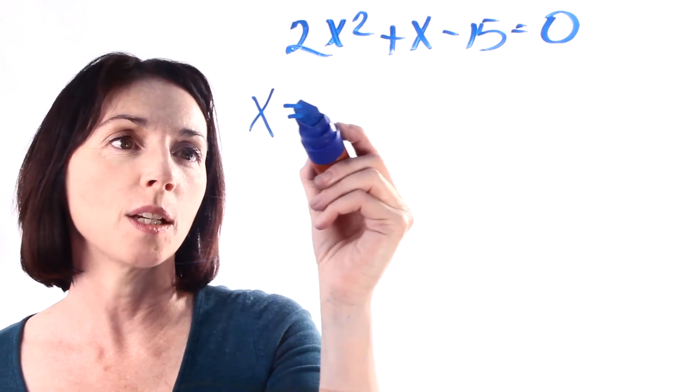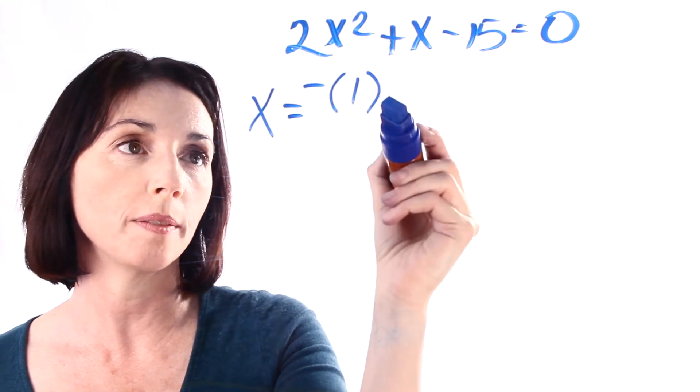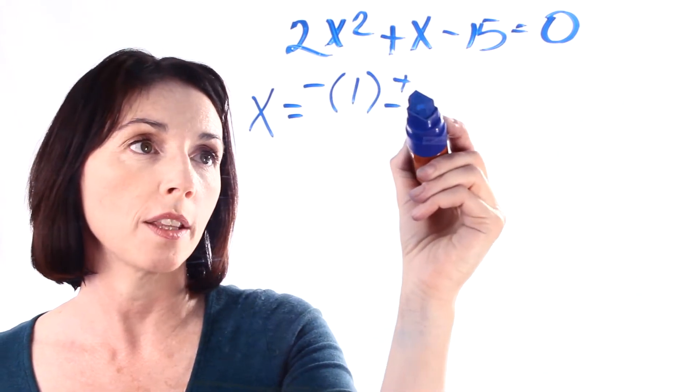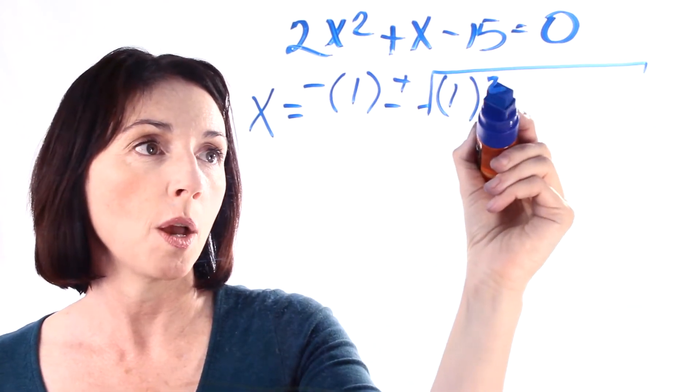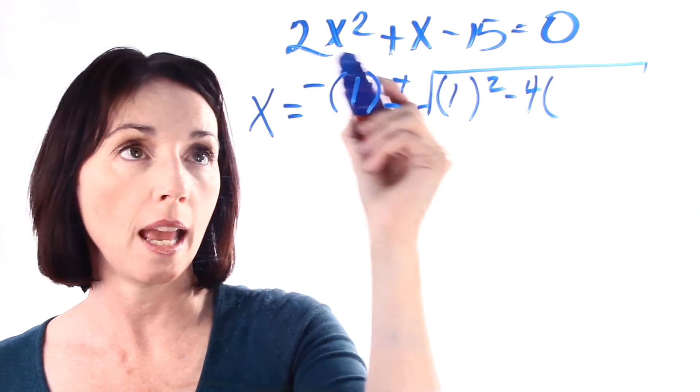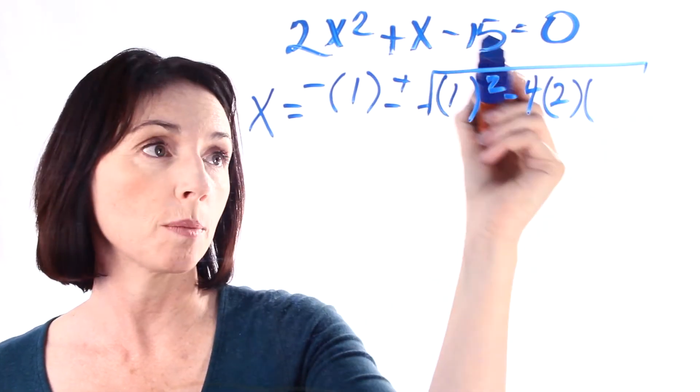So the formula says that x equals the opposite or minus of b, and in our case b is just 1, plus or minus the square root of b squared, so 1 squared, minus 4 times a, which is 2, times c, which is minus 15.